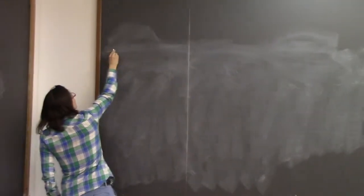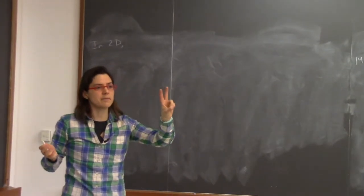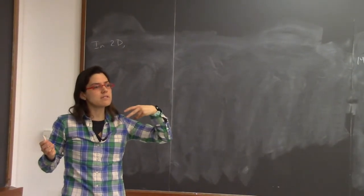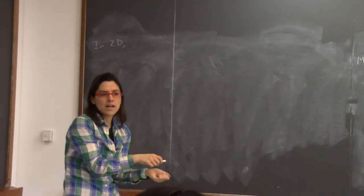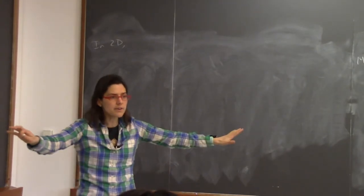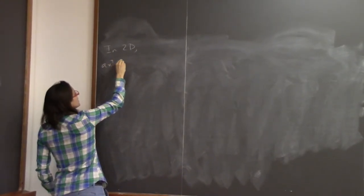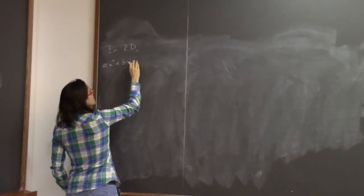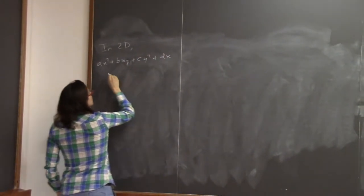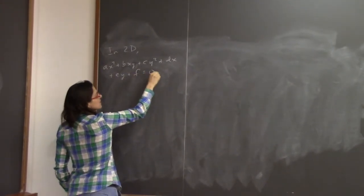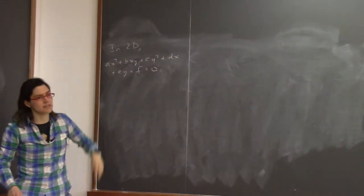In two dimensions, you can use two variables, x and y, and suppose you're allowing yourself to go up to total degree two. You could have x squared, y squared, or x times y. All the equations you could get can be summarized by: a times x squared plus b times xy plus c times y squared plus d times x plus e times y plus f equals zero. You've got your constant, your linear terms in x and y, and your three degree-two terms.